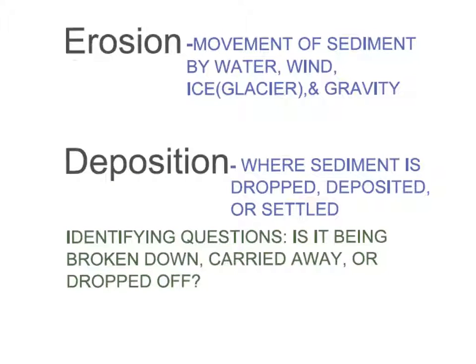To review: erosion is the movement of sediment by water, wind, ice or a glacier, and gravity. Deposition — that third key term — is where that sediment is eventually dropped, deposited, or settled out. So erosion is carrying it away, and then it deposits somewhere. Later on in this unit you'll do an activity where you identify if it's erosion, deposition, or weathering — is something being dropped, broken down, or carried? That's a great identifying question.